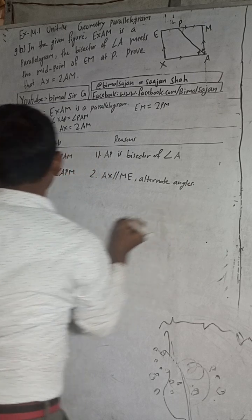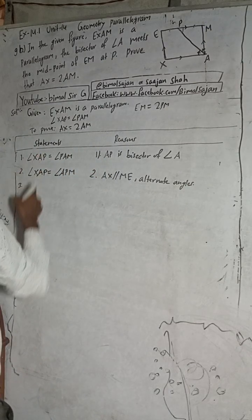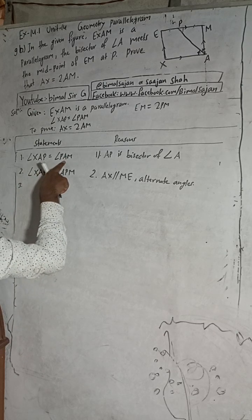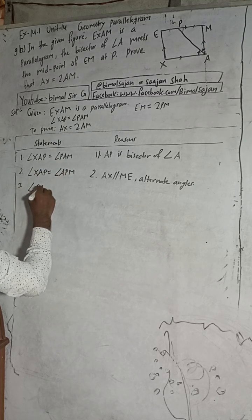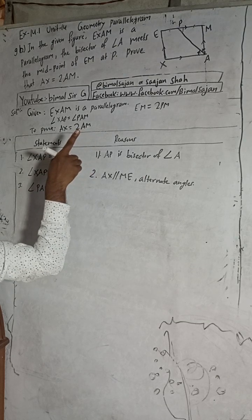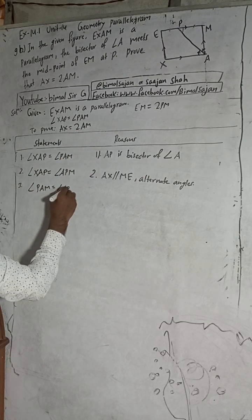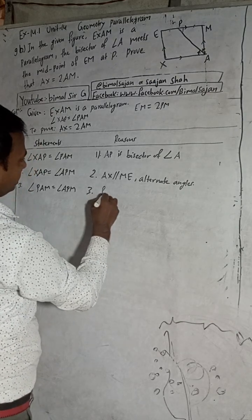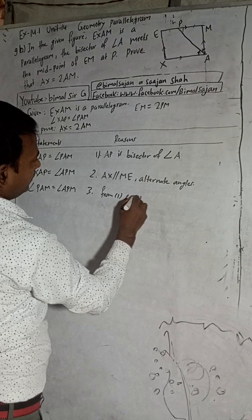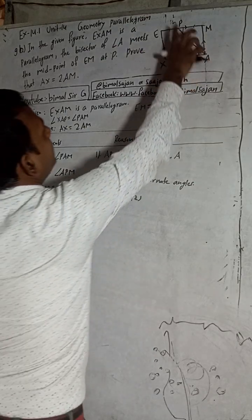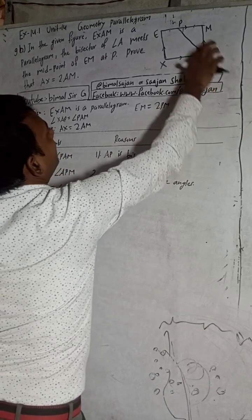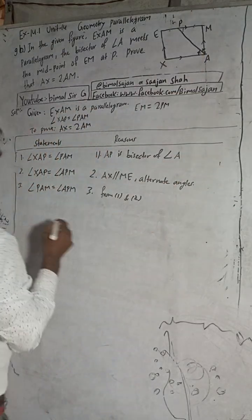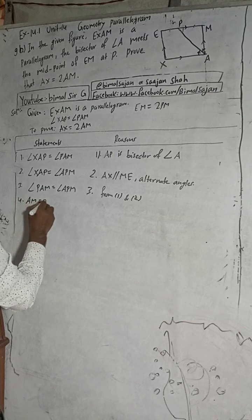From steps 1 and 2: angle PAM equals angle APM. Therefore AM equals PM — because these are the base angles of an isosceles triangle.